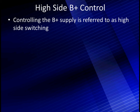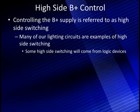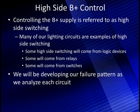We're going to be looking at lighting circuits, and lighting circuits are high-side B-plus control. That means controlling the B-plus supply is referred to as high-side switching. Many of our lighting circuits — in fact, most of them — are examples of high-side switching. Some high-side switching will come from logic devices. It may be a relay, it may be a switch, or whatever combination you're going to have. There's a variety of devices. We'll be developing our failure pattern as we analyze each circuit.